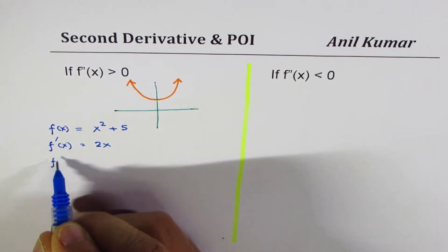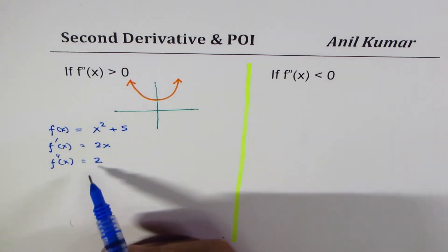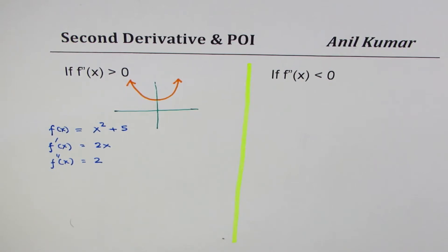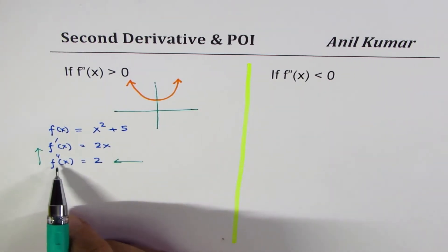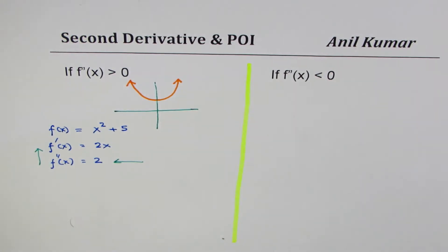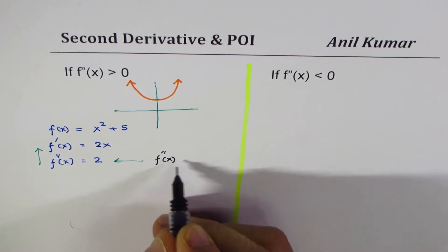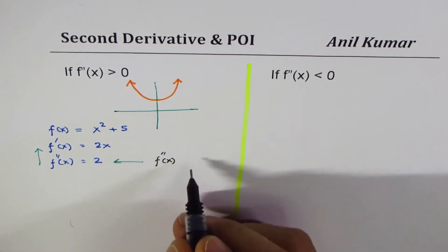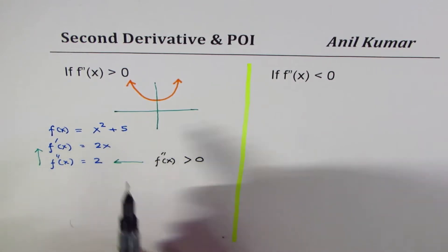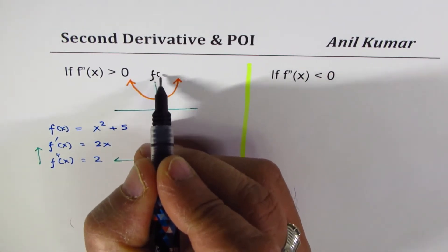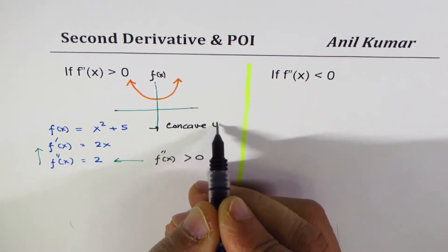In that case the derivative will be 2x and the second derivative will be 2 — simple as that. Now if you go backwards and start analyzing, you realize that the second derivative is greater than 0 — it is plus 2, always greater than 0. And when the second derivative is always greater than 0, the shape of the curve f(x) is concave up.